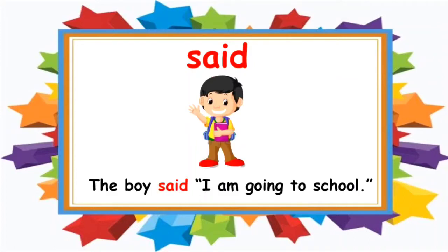How have I used the word 'said' in a sentence? Let us read the sentence: The boy said, 'I am going to school.' You can see the boy — he is wearing a school bag, he is having a book in his hand, and he is saying that he is going to school. So, the boy said I am going to school.